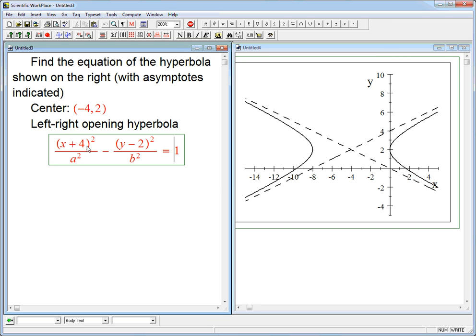We just need to find a and b. The plus 4 shifts left, and the minus 2 shifts up, so that the center, which would have been at the origin for the standard form, has been shifted to (-4, 2).